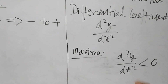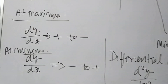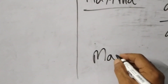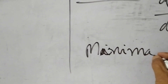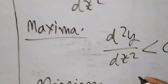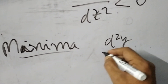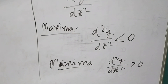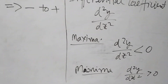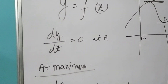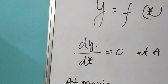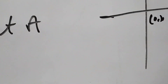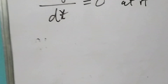At maxima d²y by dx² is less than zero because dy by dx changes from positive to negative — that is why it is less than zero here. At minima, d²y by dx² is greater than zero. In summary: dy by dx equal to zero is common for both, and d²y by dx² is different for maxima and minima.